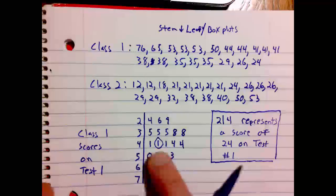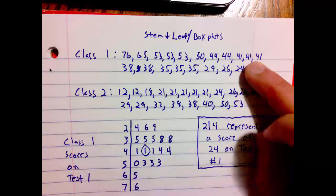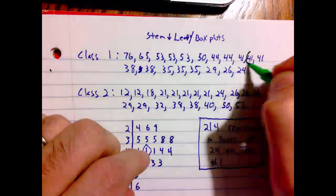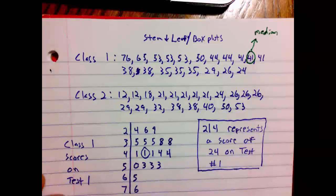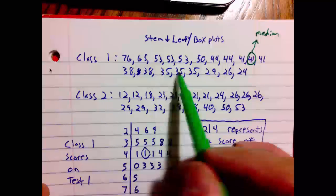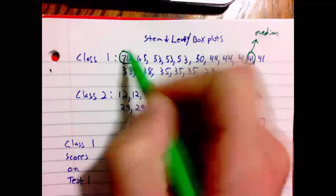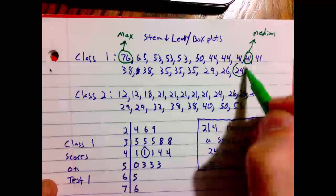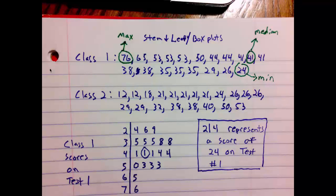Going back to Class 1, we've already found the median — it's 41, specifically this particular 41 in the data. We can verify: counting 9 observations below and 9 above. The largest observation is 76, the maximum; the smallest is 24, the minimum.